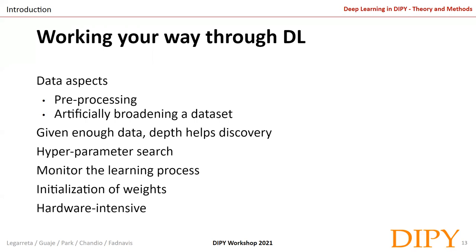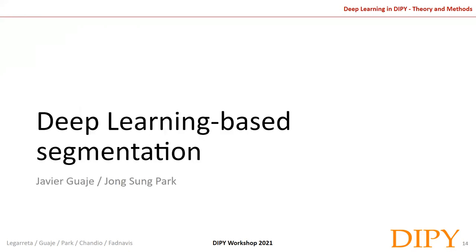Weight initialization also matters: small random numbers may be fine for small networks, but in deeper networks, activations or gradients may rapidly become zero. Wiser initialization strategies have been proposed in the literature. Finally, to perform deep learning tasks at reasonable speed, we use GPUs — originally designed for video gaming but repurposed because their parallel computing power efficiently handles the millions of operations deep learning architectures require.